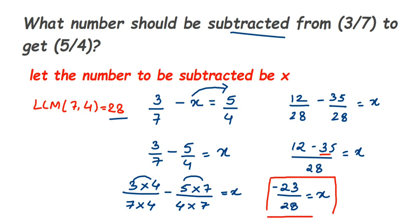So the number which has to be subtracted from 3/7 is minus 23/28. That's it. I hope this question is clear. In case you have any other question from this chapter or any other chapter, you can drop a comment. Thank you so much for watching.